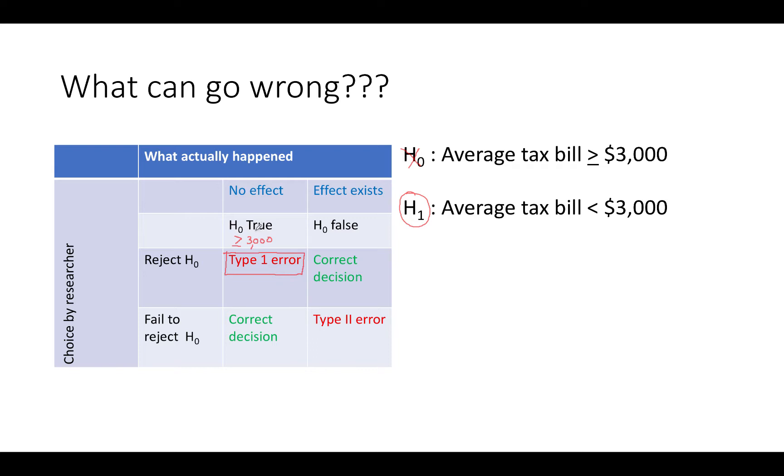If the null hypothesis is true and the researcher decides that the data fails to reject it or it's true, they've made the correct decision. Similarly, if they reject the null hypothesis and it's false or the alternative is true, they've also made the correct decision.